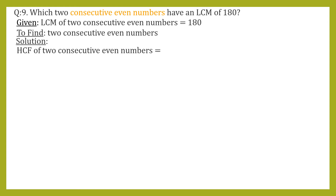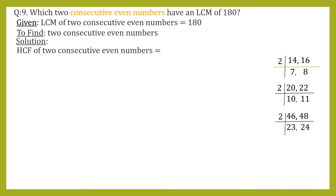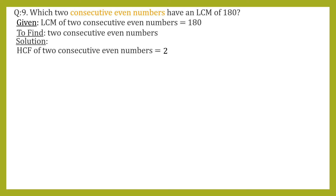The LCM of two consecutive even numbers is already given as 180. Now, what will be the HCF of two consecutive even numbers? From observing the factorization of even numbers, we can conclude that when we take any two consecutive even numbers, the HCF is always 2. So HCF of two consecutive even numbers equals 2.